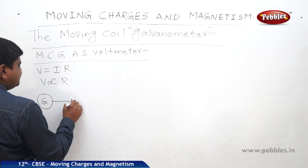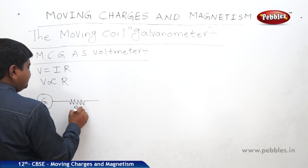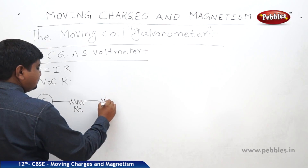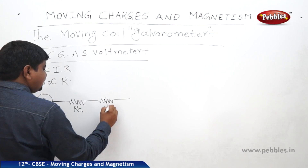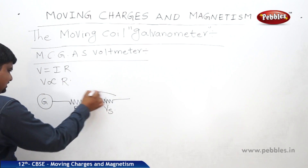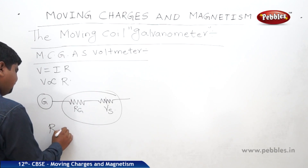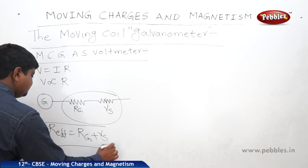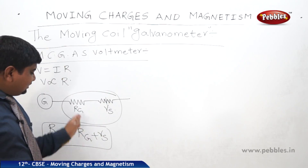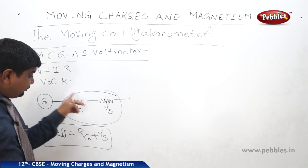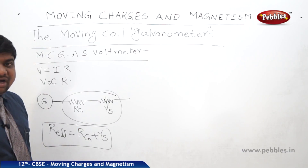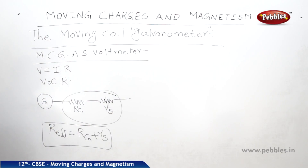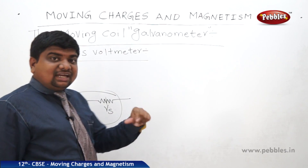The galvanometer has resistance RG, and we connect a shunt resistance RS in series. The effective resistance is R_effective = RG + RS. If RS is greater than RG, effective resistance becomes RS; if RG is greater than RS, it becomes RG. This configuration allows it to work as a voltmeter. Previously, we discussed current sensitivity in the ammeter: φ/I = NAB/K.